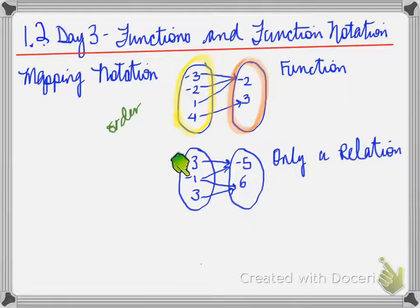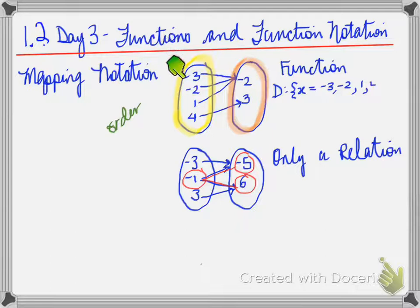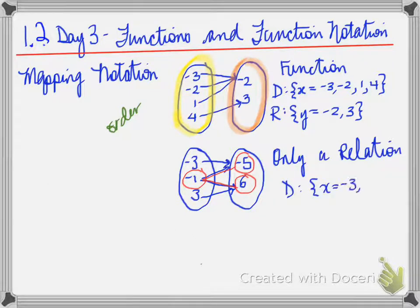The second one is not a function. It is only a relation. Why? Well, you need to identify why it's not a function. And that's because negative one has two y values. So it fails the definition of a function. Now, keep in mind, the domain are only these values. So we just list them like we did in the past. In range, we do the same. We just list the y values.